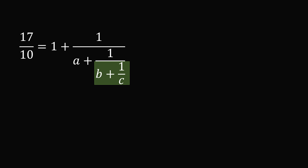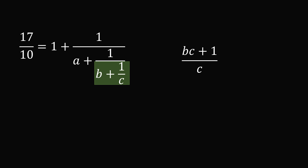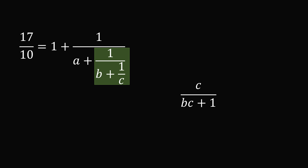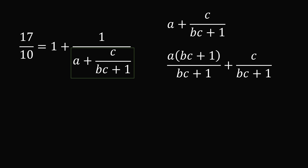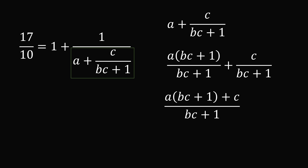So let's start out with b plus 1 over c. We want a common denominator, so we'll multiply b by c over c. Since c over c equals 1, this becomes bc over c plus 1 over c. We now have a common denominator of c, so we can add the numerators, giving us bc plus 1 all over c. We now need to take the reciprocal, switching numerator and denominator, to get c over bc plus 1. We now substitute that in, giving us a plus c divided by bc plus 1, and simplify with a common denominator — multiplying a by bc plus 1 over bc plus 1 — to get a times bc plus 1 plus c, all over bc plus 1.